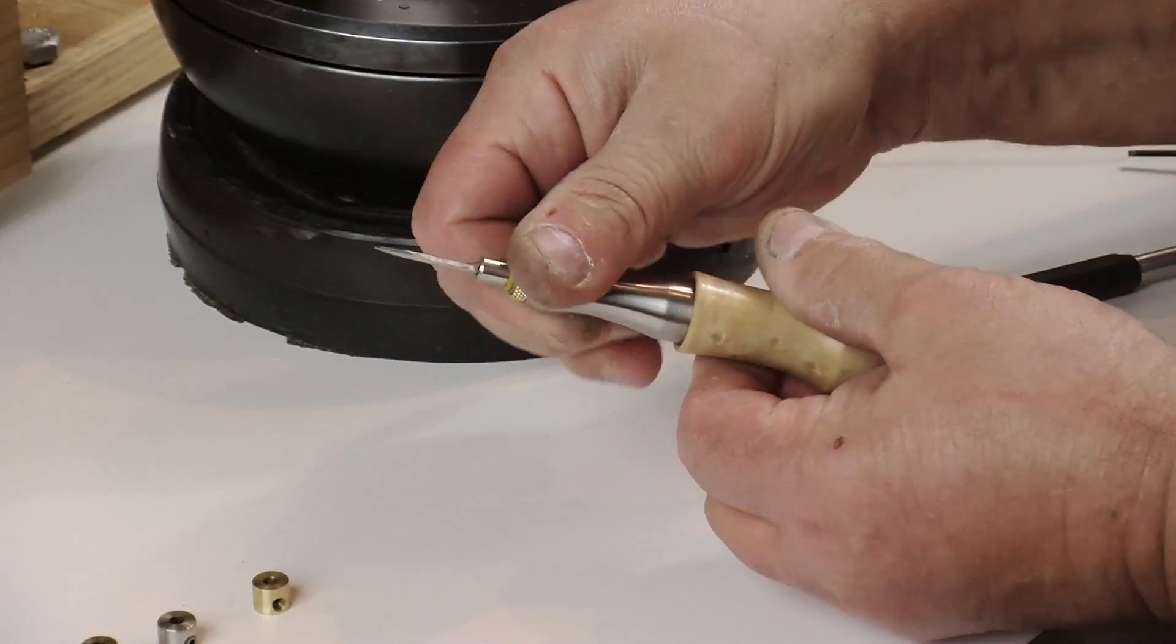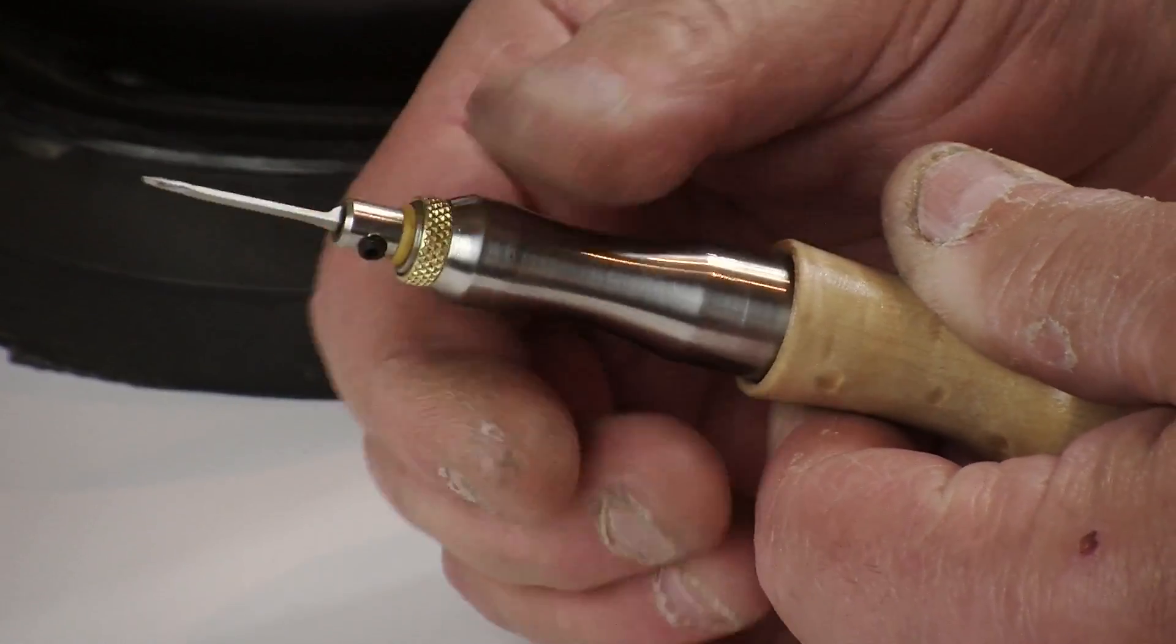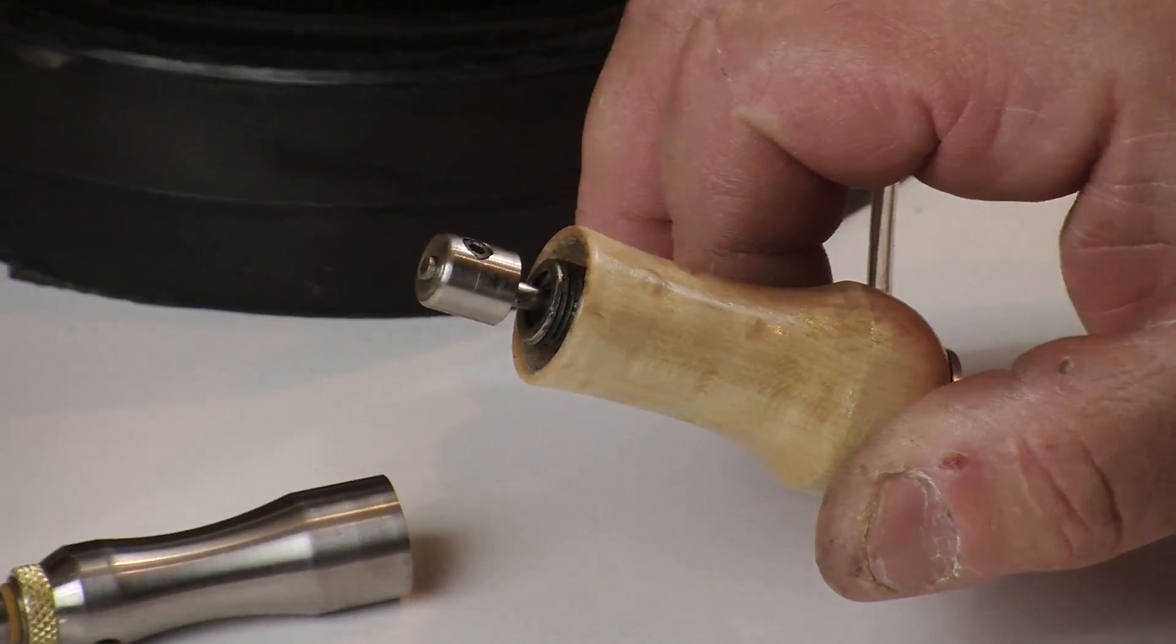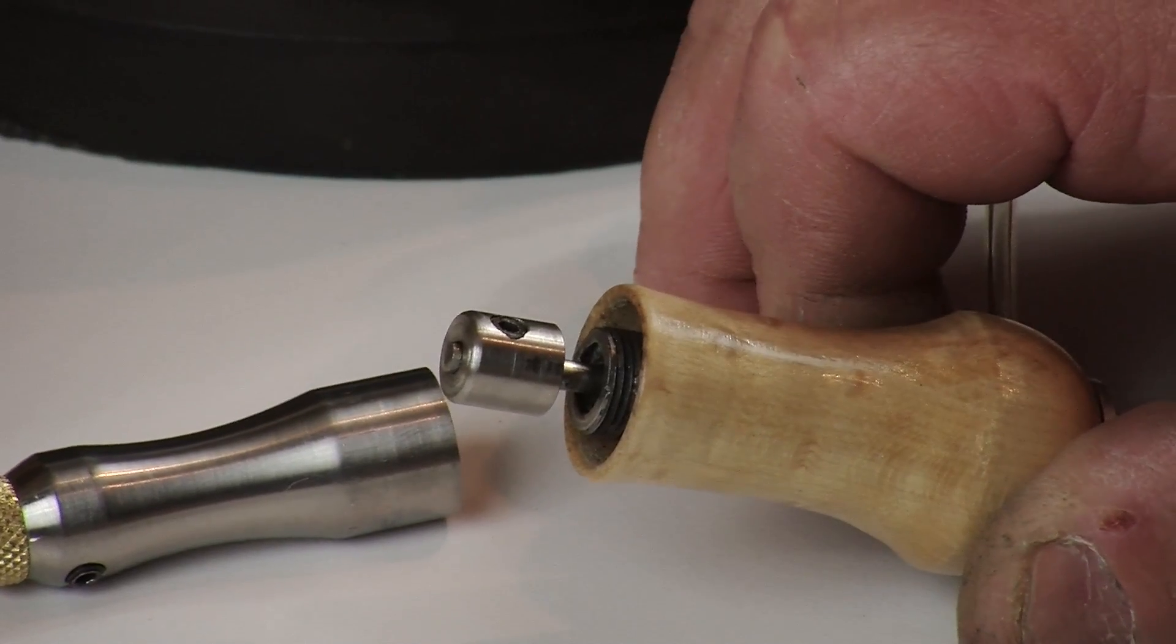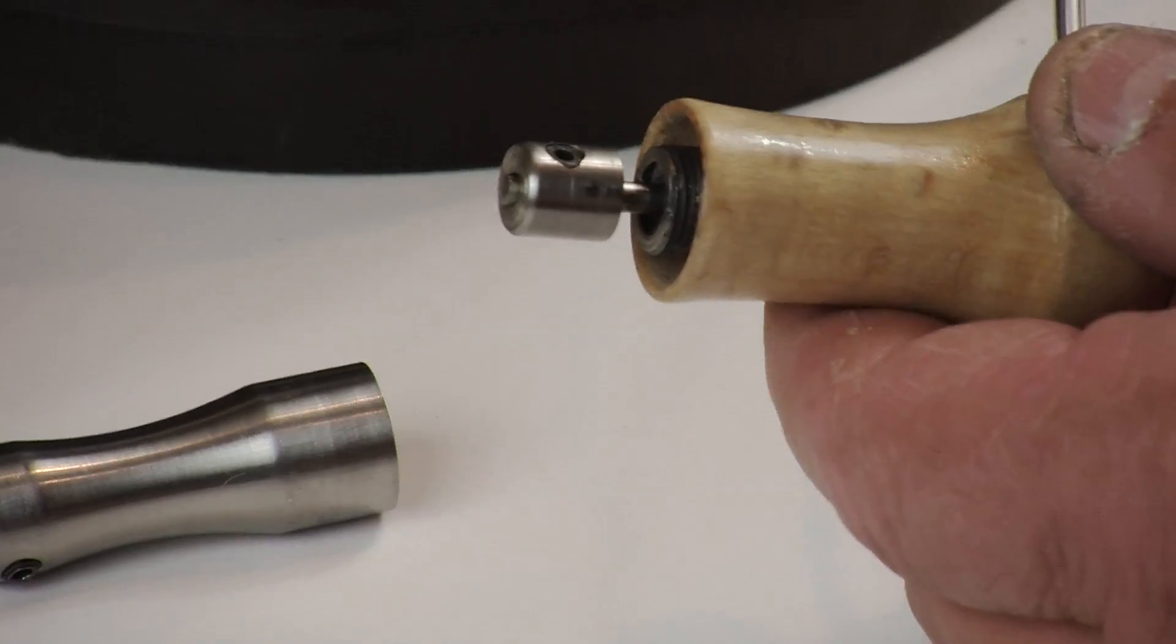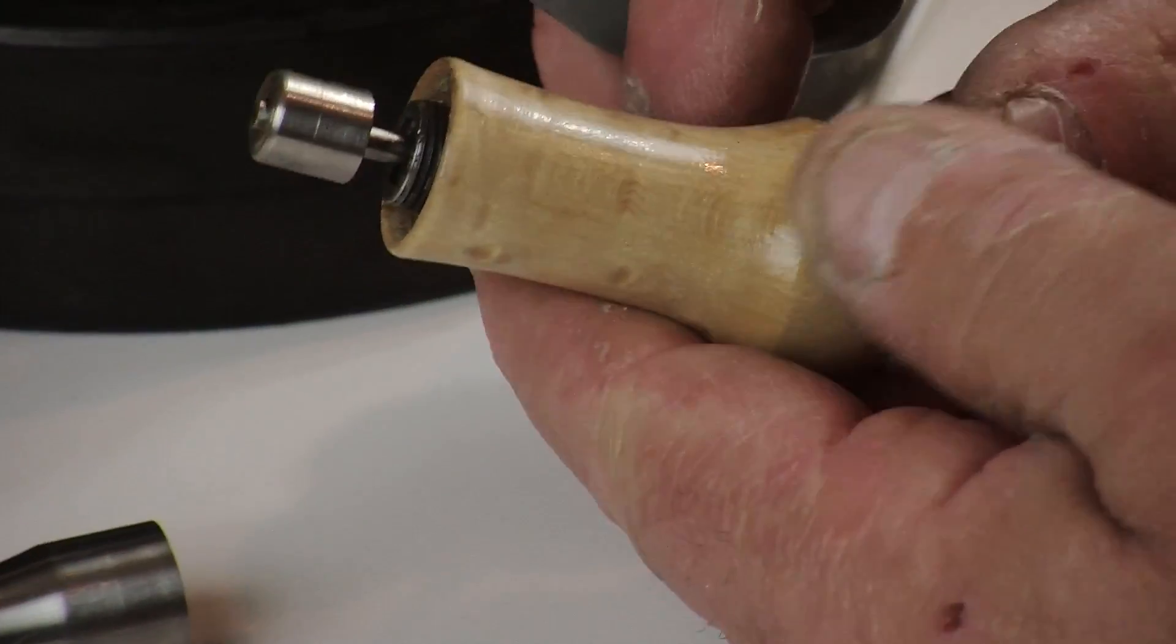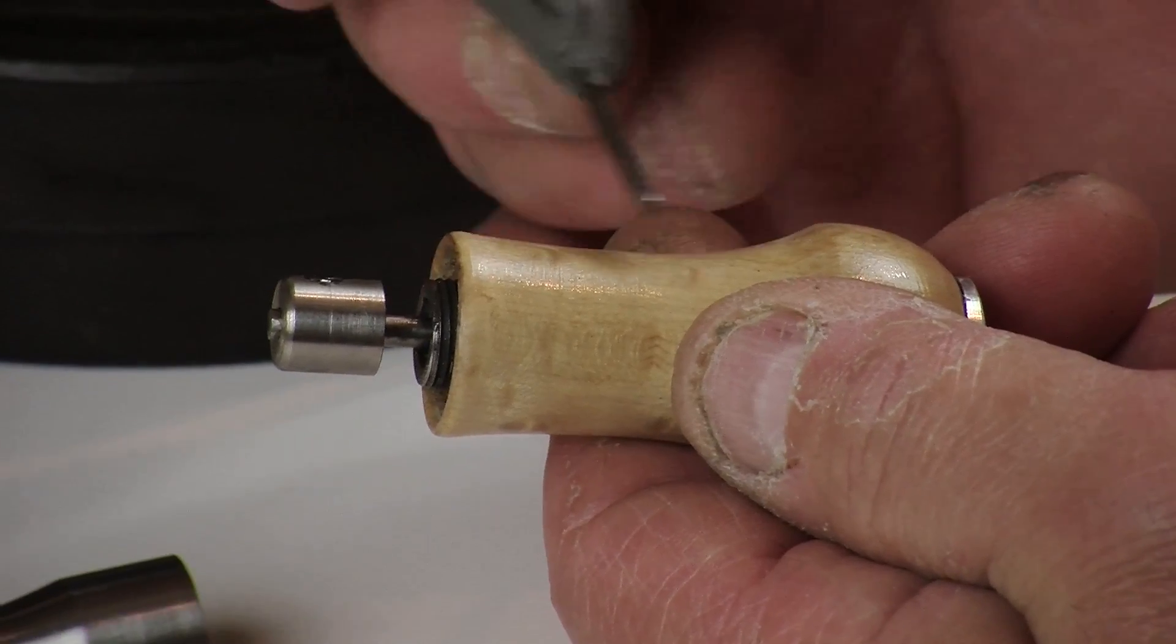This part of the handpiece unscrews, and inside you have your striker head which can be changed. The weight of that, along with your pressure, will give you a different power range. This part of the handpiece I call the engine, and the piston is inside the handle here.